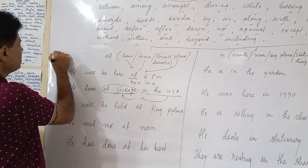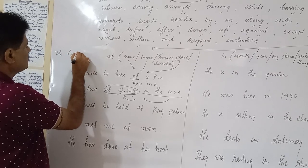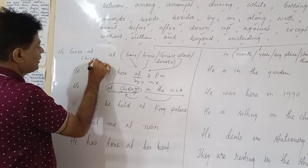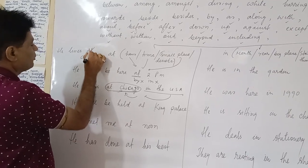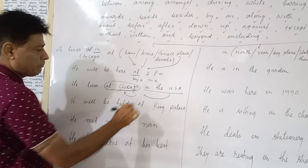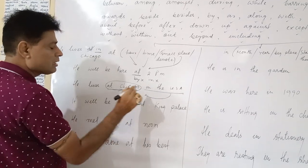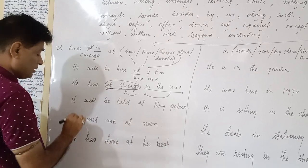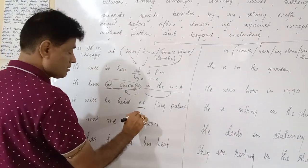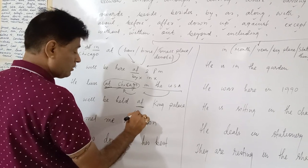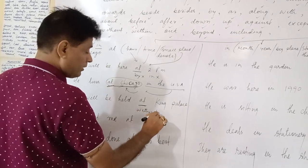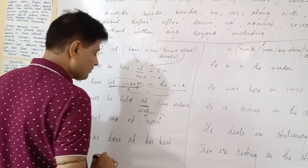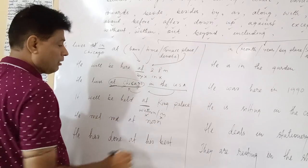But when you write he lives at Chicago, then sentence will be incorrect. Here you have to use he lives in Chicago. But once the big place comes with the same sentence, then you have to use at. It will be held at king place, not in king place. At will be right for here because to denote a place.